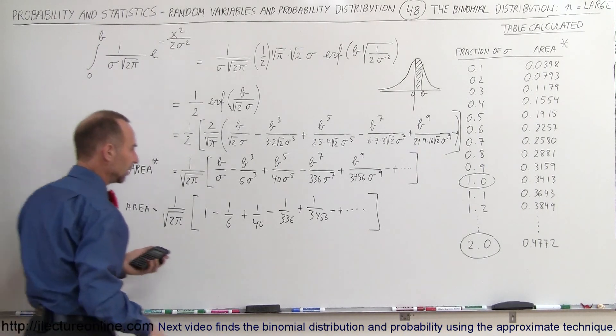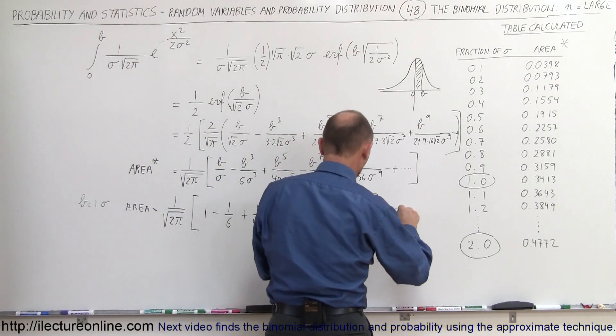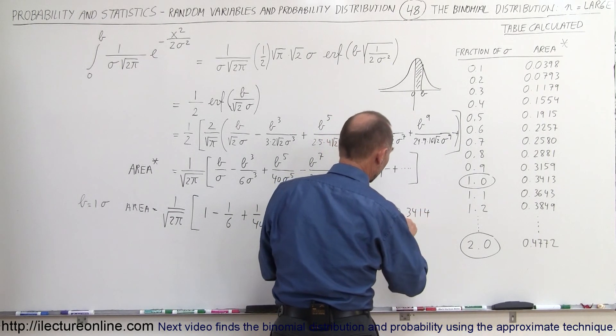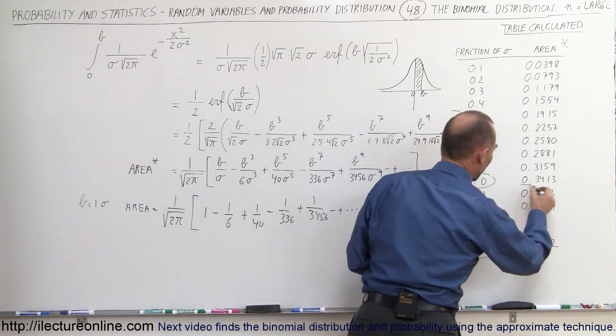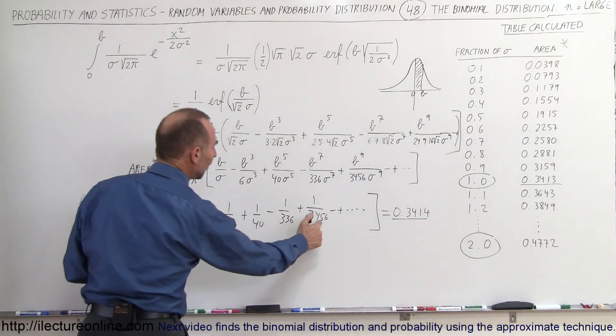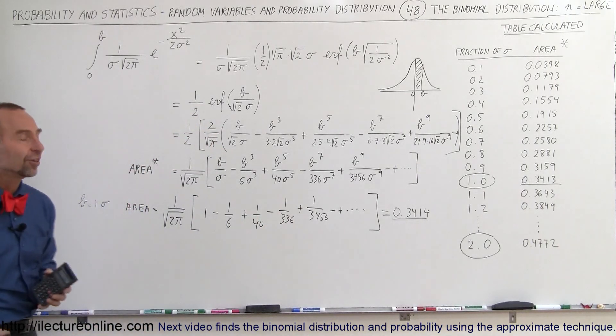And the number I end up with here is 0.3414. Now, compare this number to this number right here, and notice we got really close with only taking one, two, three, four, five terms of that infinite series.